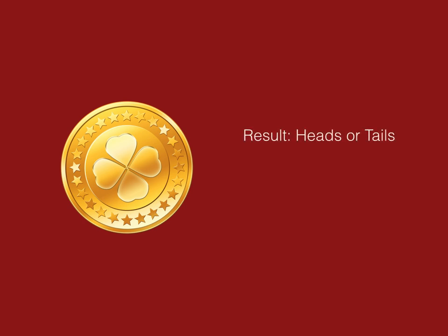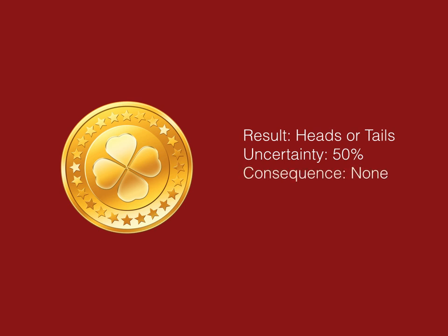Let's say, for example, we have a coin. The coin represents uncertainty because we're going to flip it — it can either land on heads or tails. We're not sure what's going to happen. My question is: what is the risk involved with flipping the coin? The result is either heads or tails, and the uncertainty is 50%. But here's the important part: there are no consequences. If I flip the coin, I don't care if it lands heads or tails. That result has no consequence on my life, and therefore there is no risk.